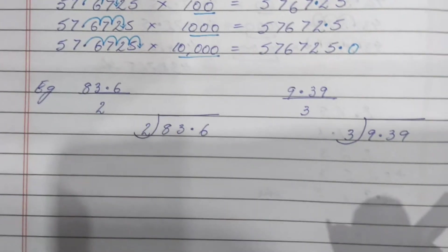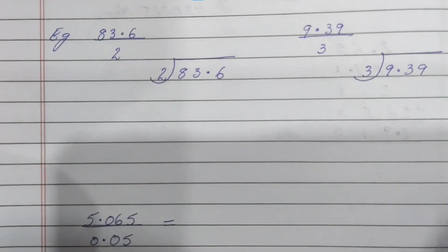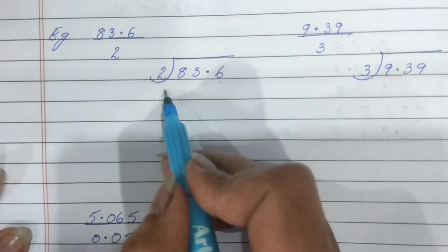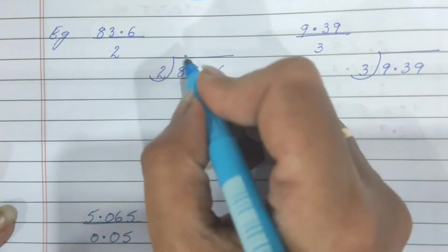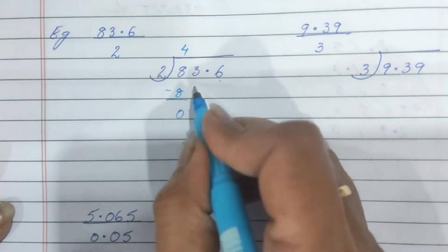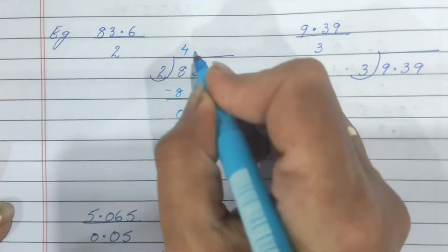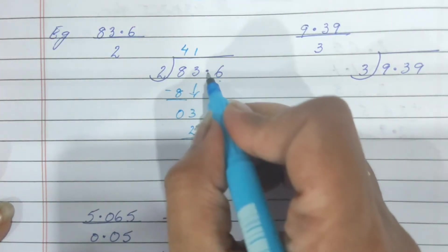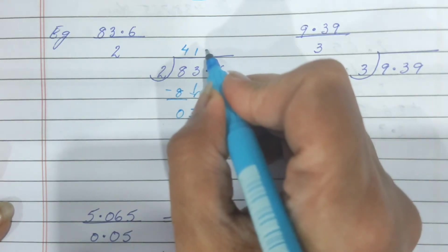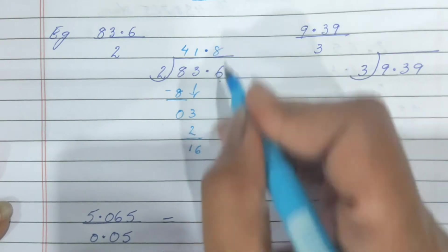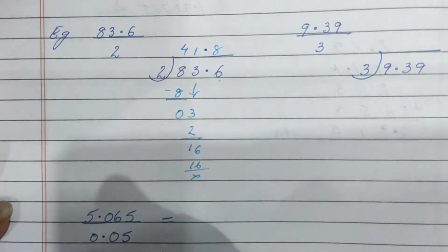This was about multiplication. Now coming to division. I have to divide 83.6 by 2. You do the normal division: 2 fours are 8, copy down 3, 2 ones are 2, 1. Now my numbers have finished and we have a decimal, so in the quotient you also put a decimal. Copy down the next number and complete the division.